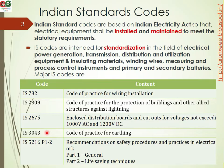IS 3043 is the code of practice for earthing. It provides guidelines and details on earthing and earth protection in electrical installations.